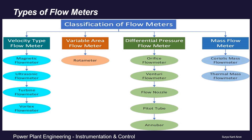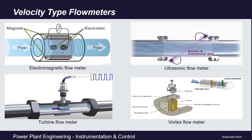To summarize: in velocity-type flow meters, flow is directly proportional to velocity; in variable area flow meters, flow is directly proportional to area; differential pressure-based flow meters use the inverse relationship between pressure and flow; and mass flow meters measure flow directly in terms of mass rather than volumetric flow. Various velocity-type flow meters include electromagnetic, ultrasonic, turbine, and vortex flow meters.